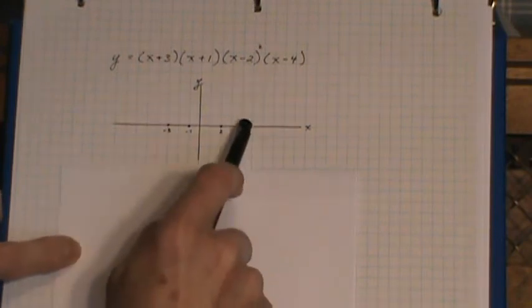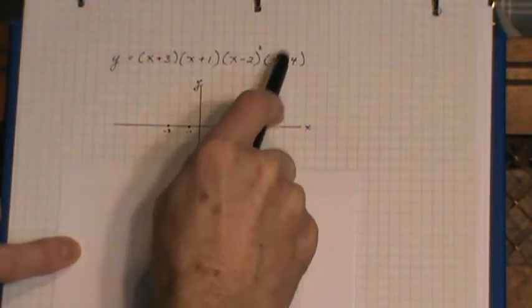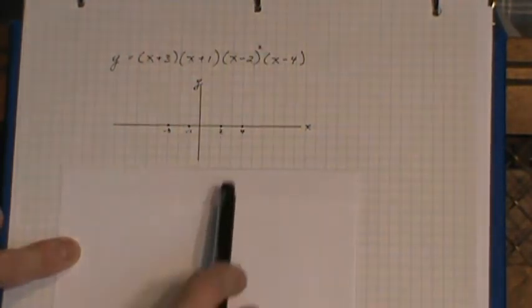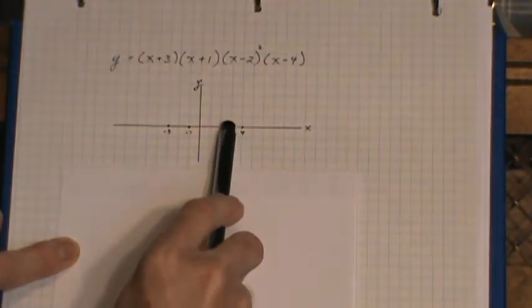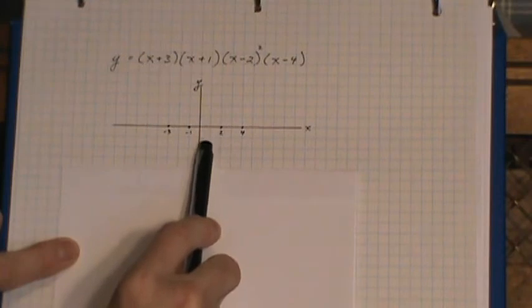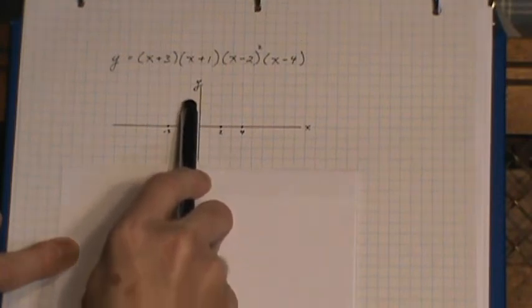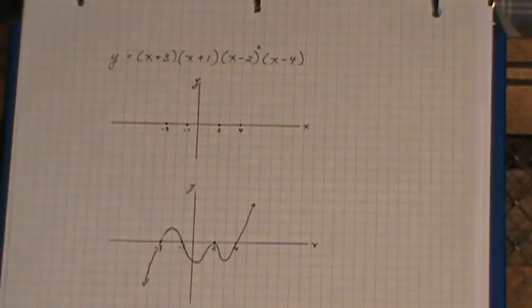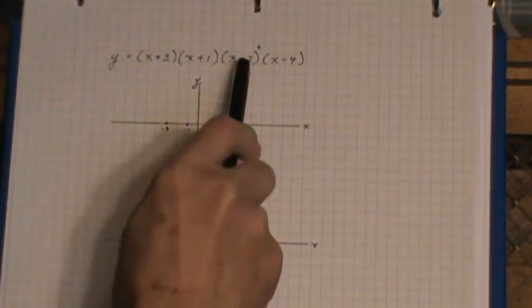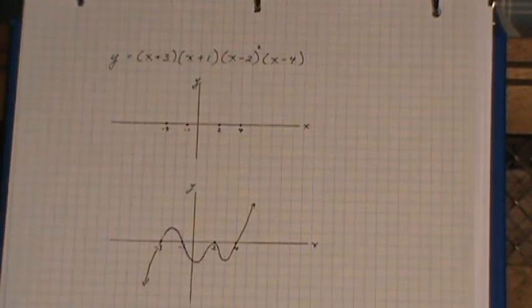which again means I end going upward. Now, the difference this time is I come down through the 4, bounce off at the 2, come back up through the negative 1, and down at negative 3. And that's what it would look like. See the bounce point at the 2 because it's a double root.